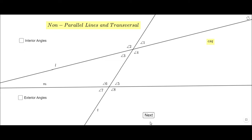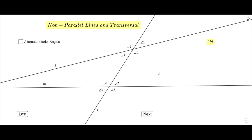Let me uncheck these and click next. Now we're going to talk about alternate interior angles. The interior angles are three, four, five, and six. For alternate interior angles, one angle is on one side of the transversal and the other is on the other side. So the pairs are three and five, and four and six — those are the alternate interior angle pairs.